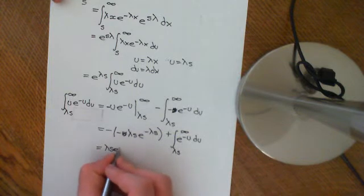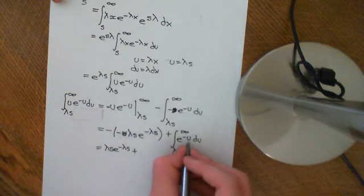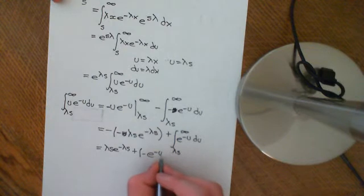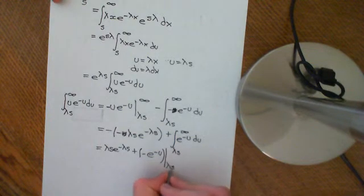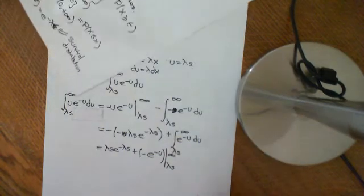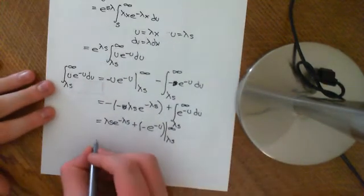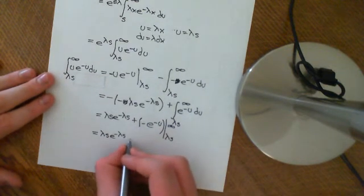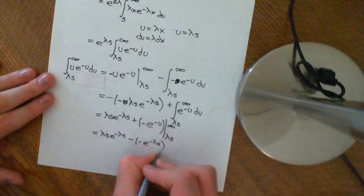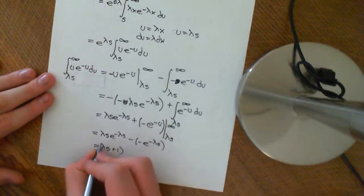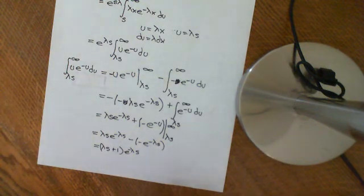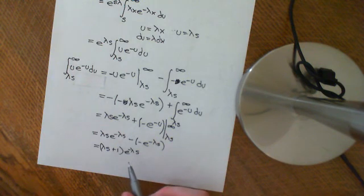So we get lambda s e to the negative lambda s, plus the integral of e to the negative u from lambda s to infinity. By the second fundamental theorem of calculus, this evaluates to negative e to the negative u between lambda s and infinity. Taking the limit as infinity gives 0, so we get lambda s e to the negative lambda s minus negative e to the negative lambda s, giving lambda s plus 1 times e to the negative lambda s. So that gives you the conditional expected value of this random variable.